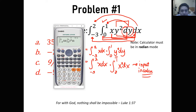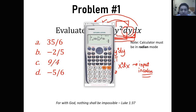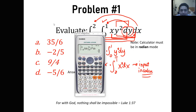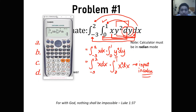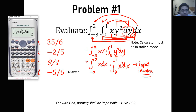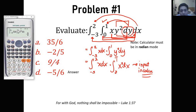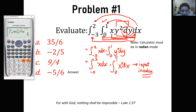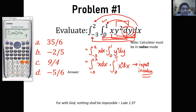We are in radian mode and we get the answer negative 5 over 6. What we did was group and analyze the double integral by matching each part with its appropriate definite integral limits. The inner variable dy has the inner definite integral, and dx has the outer integral limits. That's the calculator technique for this multiple integral.